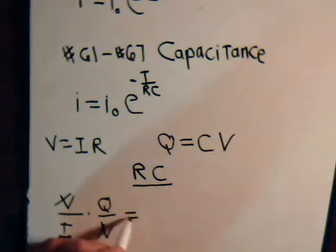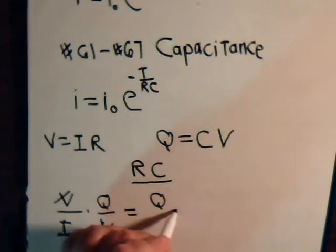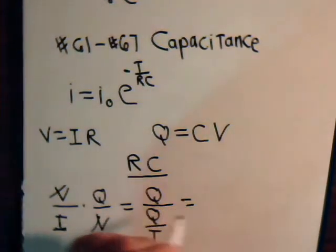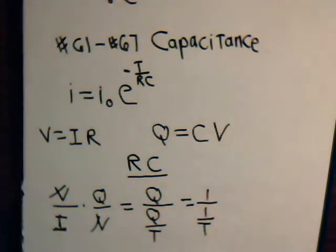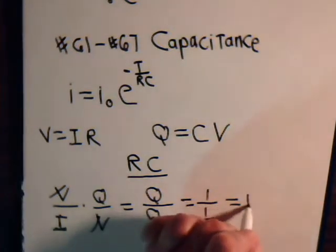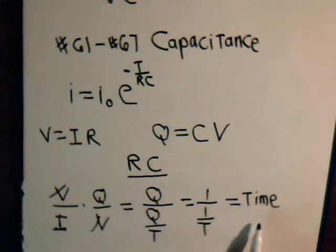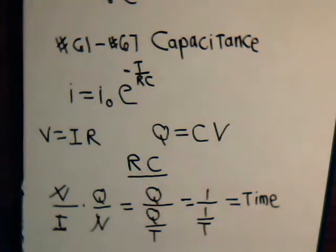So these cancel and we have charge divided by I, the current. But current is charge per unit of time. So this comes out to equal one over time. So this just gives us some expression of time. And that could be in seconds or microseconds or whatever depending upon these values. But anyway, there's a justification at least as to why resistance times capacitance gives us a time unit.